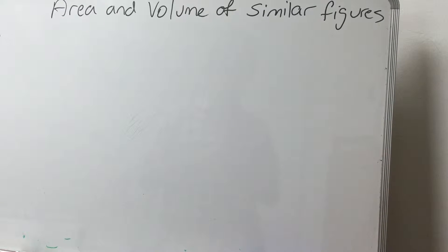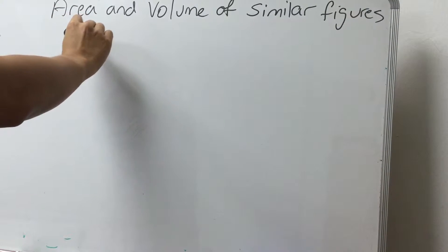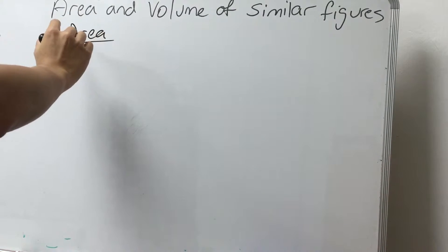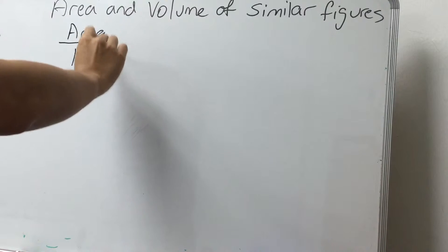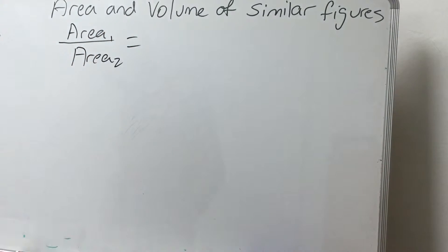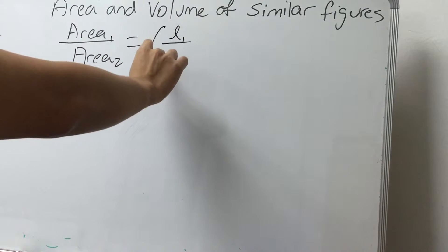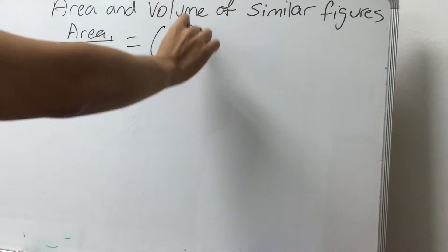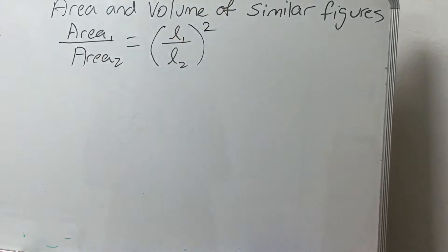This chapter will tell you how to find the area and volume of similar figures. The area for similar figures is given by the formula: Area₁ over Area₂ equals to length of 1 over length of 2. So for area, this formula is squared.